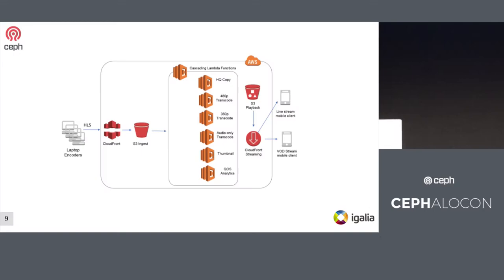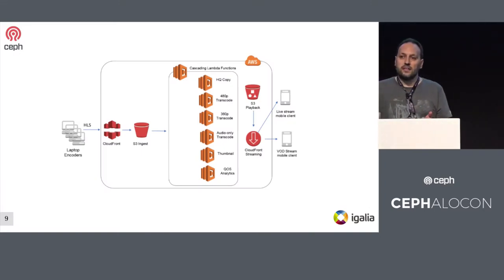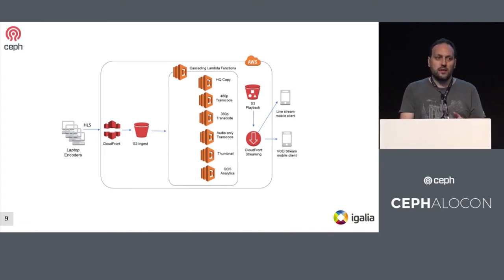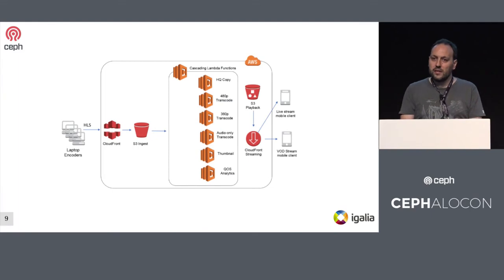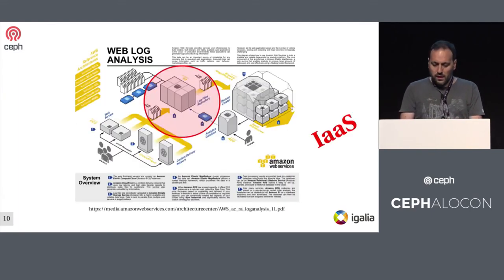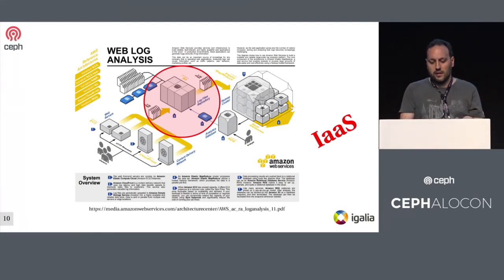The previous slide is an abstract way to understand the value chain, so I include this example. This is a video transcoding service and you can see three layers: a first layer to ingest data, server-based processing data, and the last layer — the way how things get delivered to final customers. The value chain maps to every stage perfectly. In a more compact form, you can see in the reference architectures the same pattern: data in, data out, and data in.